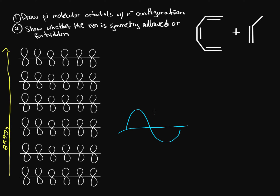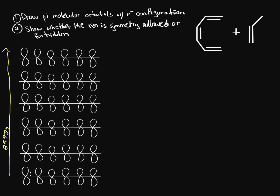Electrons act like a wave. When we add two waves together that are in phase, we get constructive overlap. In the bottom molecular orbital, all pi orbitals are in phase. We label this by coloring with either blue or green — the positive phase as blue, the other phase as green — showing bonding interactions between them.